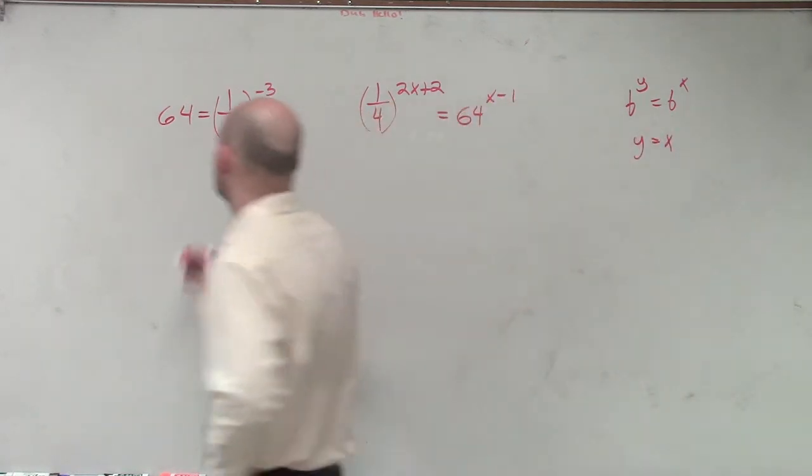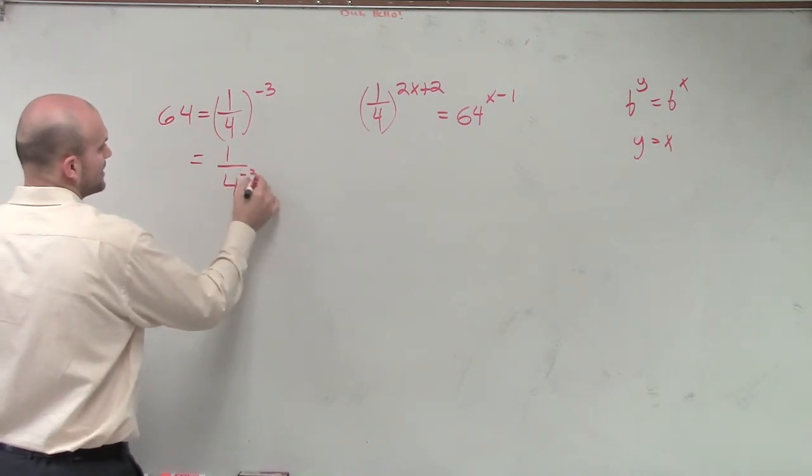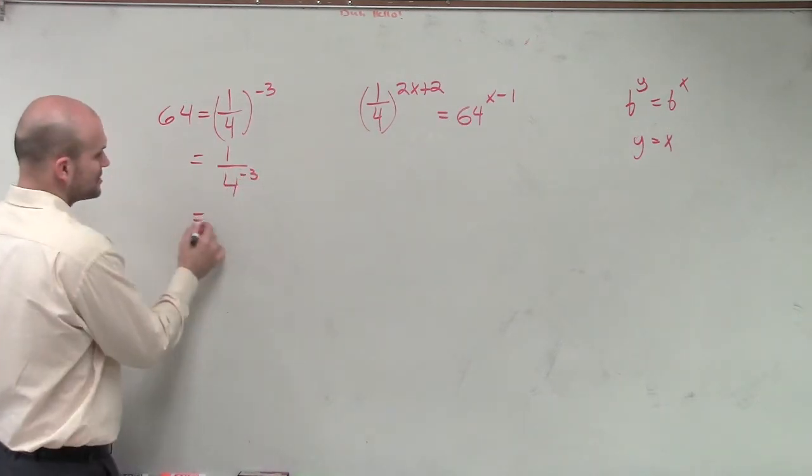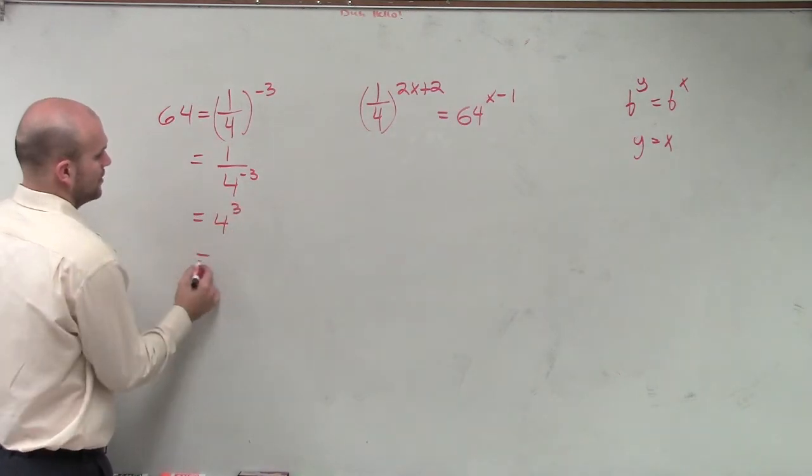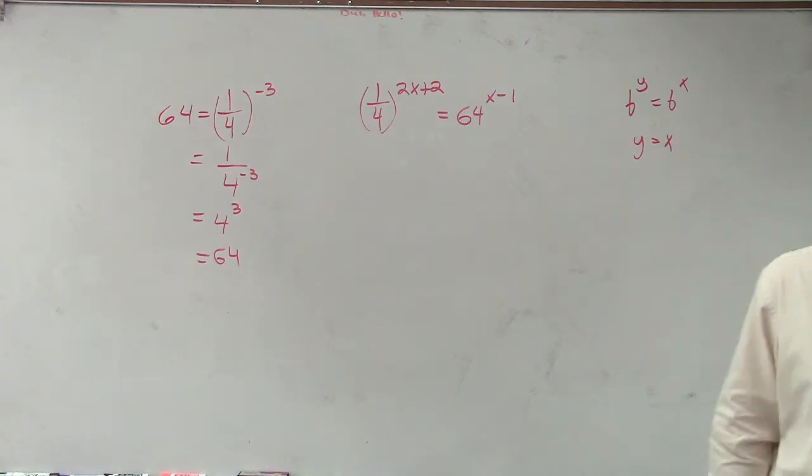1 over 4 to the negative third power equals 4 to the third power, which equals 64. Right? Does everybody follow?